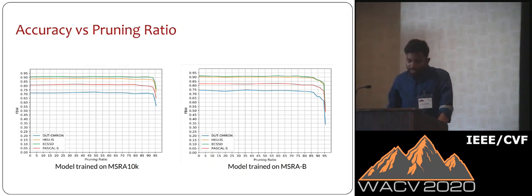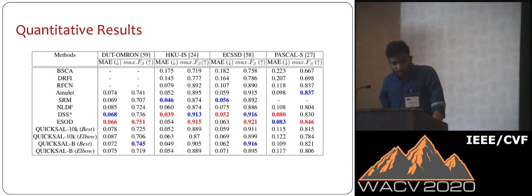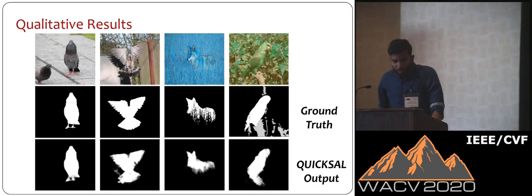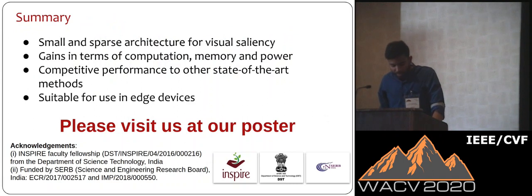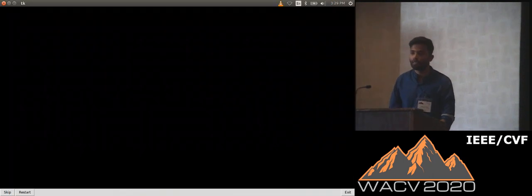We can see that our model's performance remains constant across multiple levels of pruning, and our QuickSal method is many times smaller than other approaches. When we look at the quantitative results, our model — though small — achieves competitive performance with other state-of-the-art approaches, achieving top-two performance in two out of four benchmark datasets. Our model also performs well across different settings such as low contrast, shadows, and camouflage. To summarize, we have a small and sparse architecture for visual saliency with gains in computation, memory, and power. Please visit us at poster 24. Thank you.